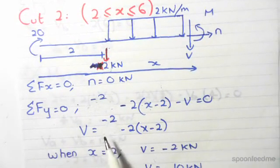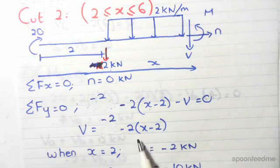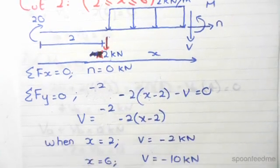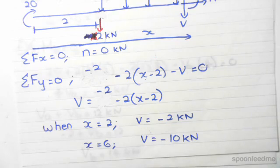We find V to equal minus 2, minus 2 into x minus 2. Now as you can see it's a function of x so we need to substitute the extremities in which are 2 and 6 as you can see here. So substituting 2 we find our shear force to be negative 2 kN. And substituting 6 meters x equals 6 we find our shear force to be minus 10 kN.